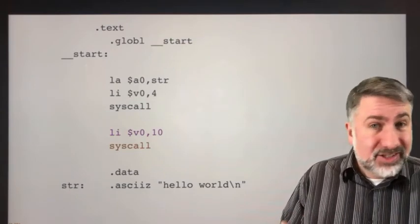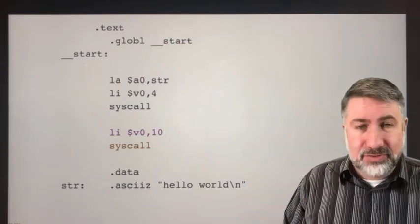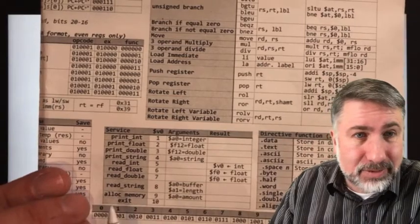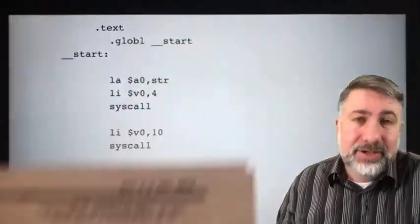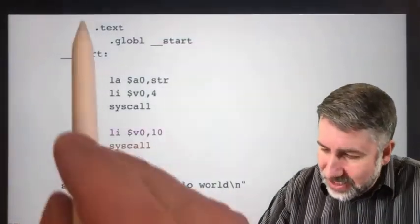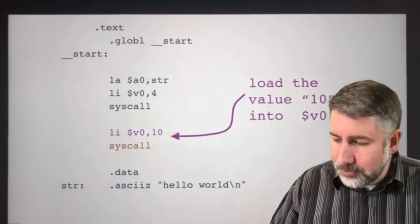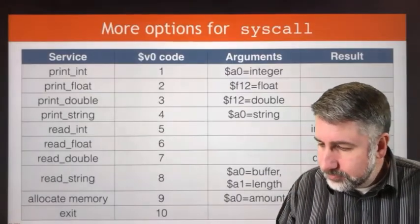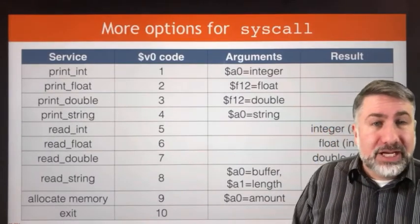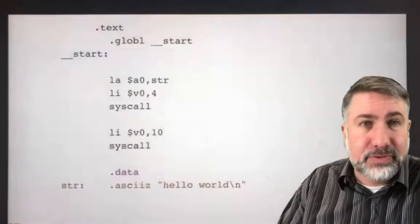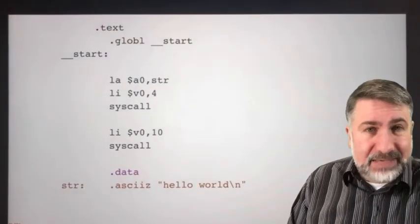Then syscall looks at that register, sees 10 means I'm done. If you look at the service calls, 10 means exit. Your program is over. So that's the end of your instruction memory, then we write in your data memory. Here are some more things for system call, these are the other things you can do. They're on your sheet as well.